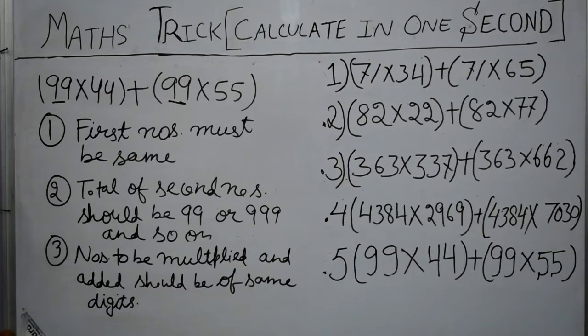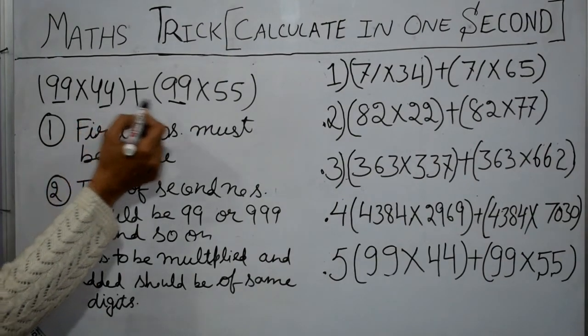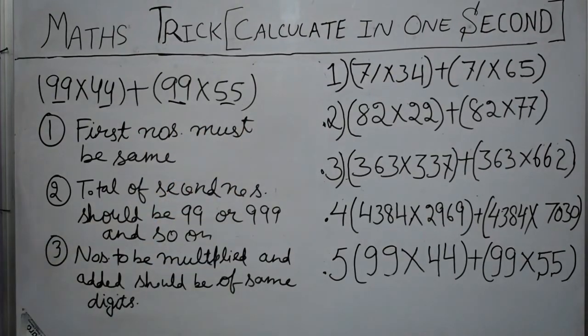Second condition is total of second numbers. Second numbers are in this case 44 and 55. Total of these numbers should be 99 if the sum is of two digit numbers. If the sum is of three digit numbers, this total should be 999. If it is of four digit numbers, then this total should be 9999 and so on.